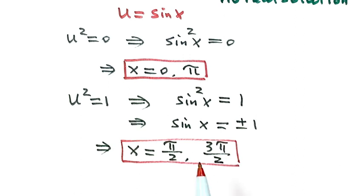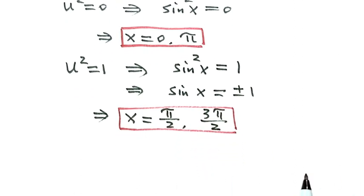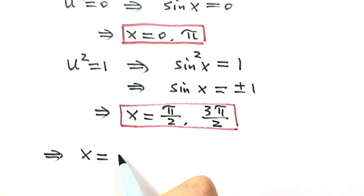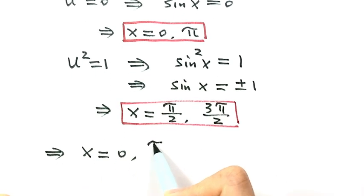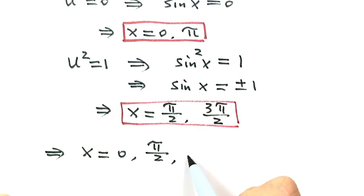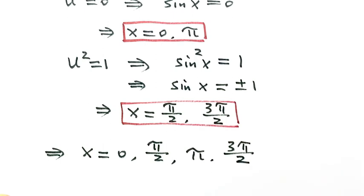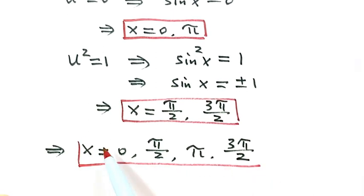Combining all solutions together, the solutions of the equation are x equals 0, pi over 2, pi, and 3 pi over 2. There are four solutions for this trig equation.